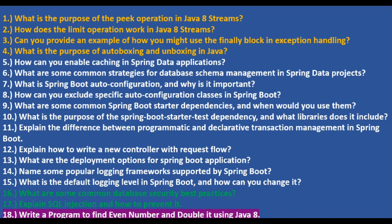What are the deployment options for a Spring Boot application? There are four prominent options: first, standalone JAR — creating a JAR and deploying it directly. Second, a WAR file deployed in a Tomcat or JBoss container. Third, using Docker containers by dockerizing the application. Fourth, cloud platforms like Azure, AWS, or GCP — for AWS you can use EKS to deploy the Spring Boot application.